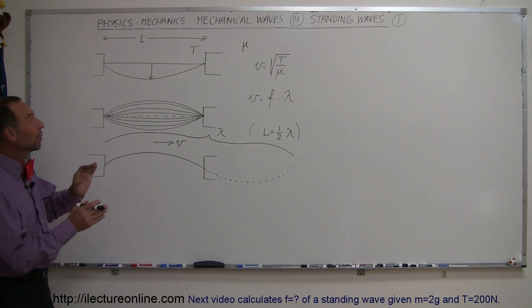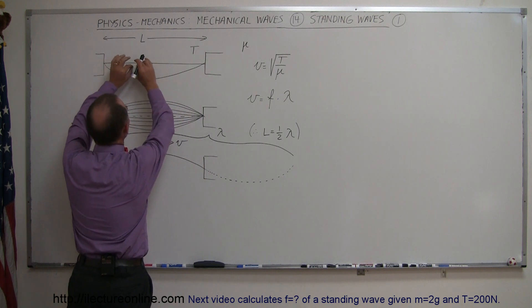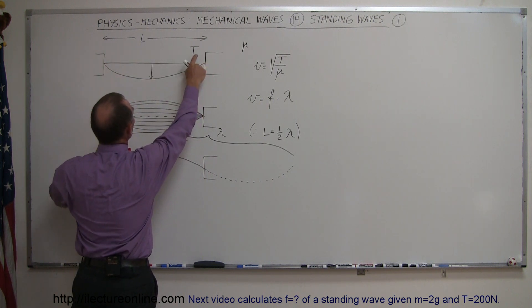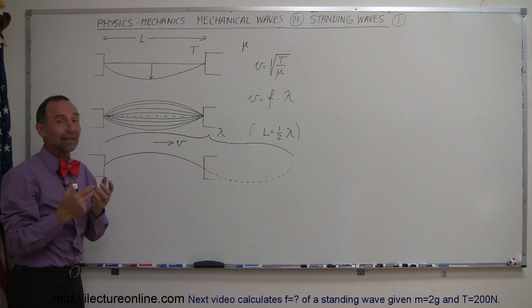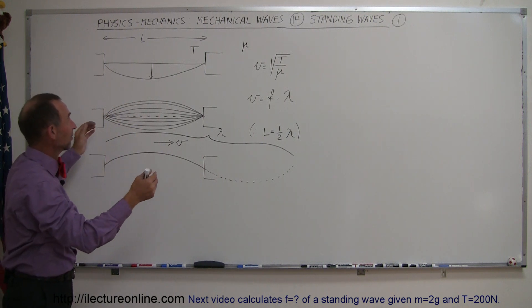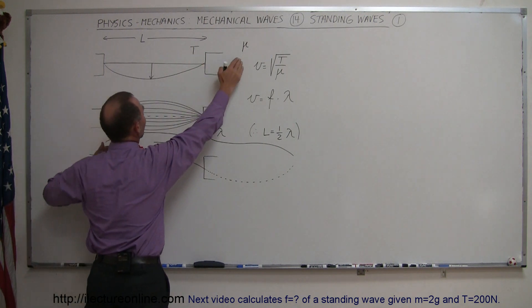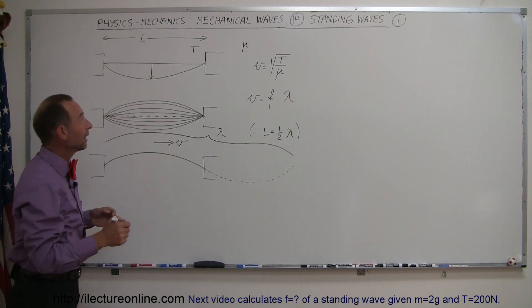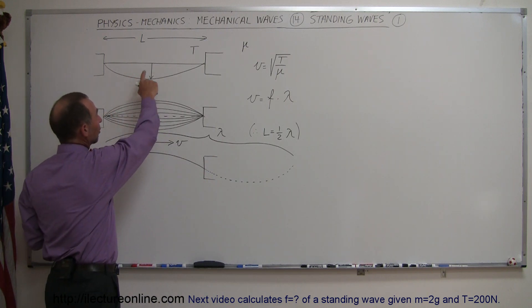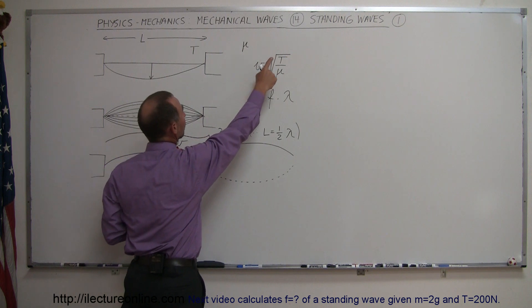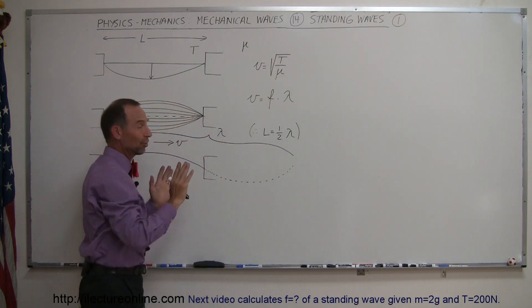Imagine that we have two solid blocks, very heavy, and we attach a string to that block, and we put that string under tension T. The string has a certain amount of mass, it has length L, so it has a mass per unit length μ, and so we know then that any wave traveling on that string will have a velocity equal to the square root of the tension over μ.